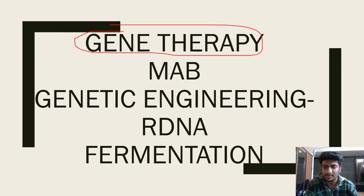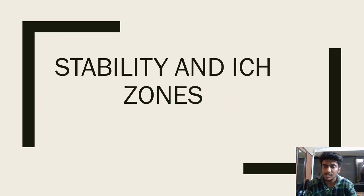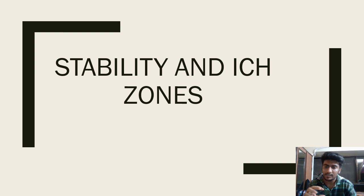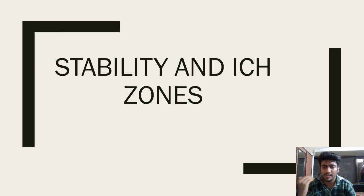All these things are very general and get asked. Stability and ICH zones: ICH Zone 1, 2, 3, 4, 4A, 4B — temperate, tropical, subtropical. How much temperature: 75/45 or 65/35? You should be clear on those values.